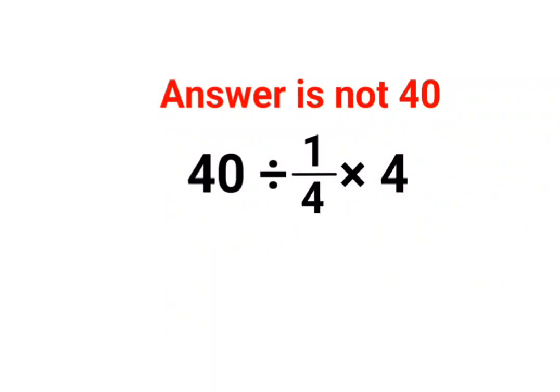Welcome everyone. Today we are going to understand why the answer for this question is not supposed to be 40. Now please understand here a lot of people thought that let's cancel this. So then we are just left with 40 divided by 1 and then we get the answer as 40.